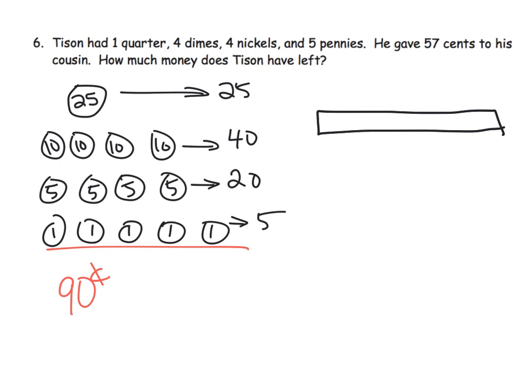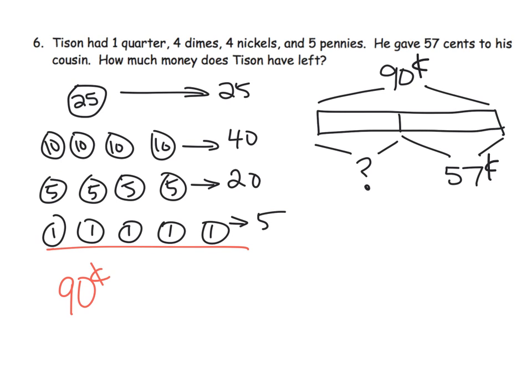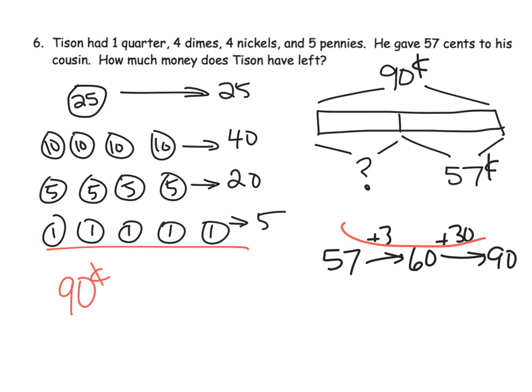So we're going to model that. He had 90 cents but he gave away 57 cents, so how much money does Tyson have left? That's the classic way that tape diagram would look. Now it's time to subtract. One way we could subtract is by adding up — we could use the arrow method and say: 57 plus 3 gives us 60, plus 30 gives us 90. So that means Tyson has 33 cents left over.